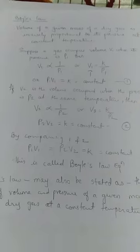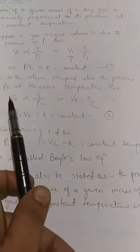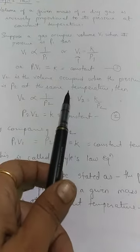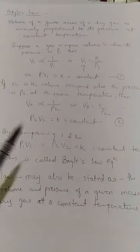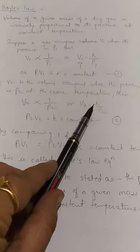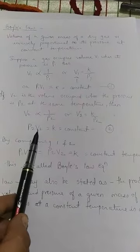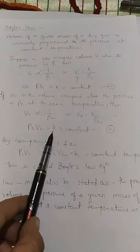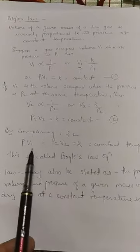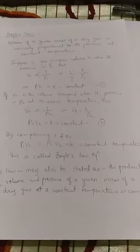In the second condition, the gas occupies volume V2 when the pressure is P2. If the volume becomes V2, then pressure automatically becomes P2. Here also temperature remains constant — the temperature is the same in both cases. Similarly, V2 is inversely proportional to P2, and cross-multiplying gives P2 × V2 = K. Comparing the first and second equations, we get P1V1 = P2V2, which holds at constant temperature.